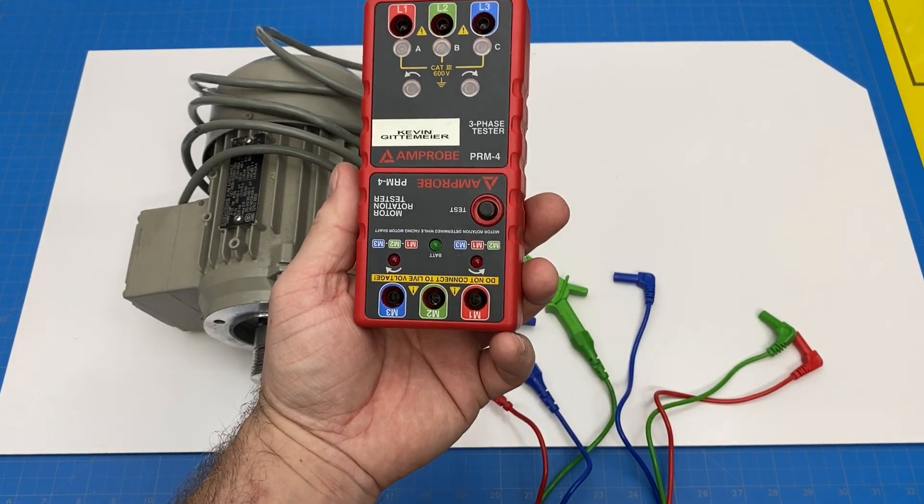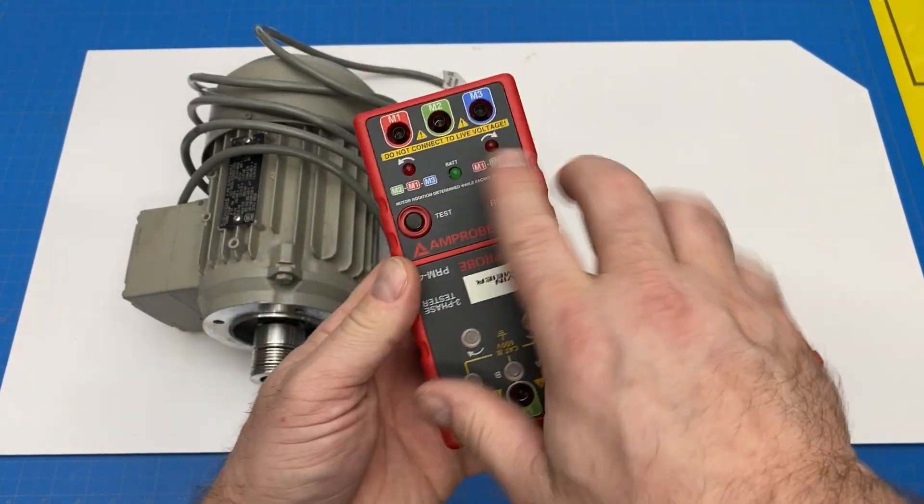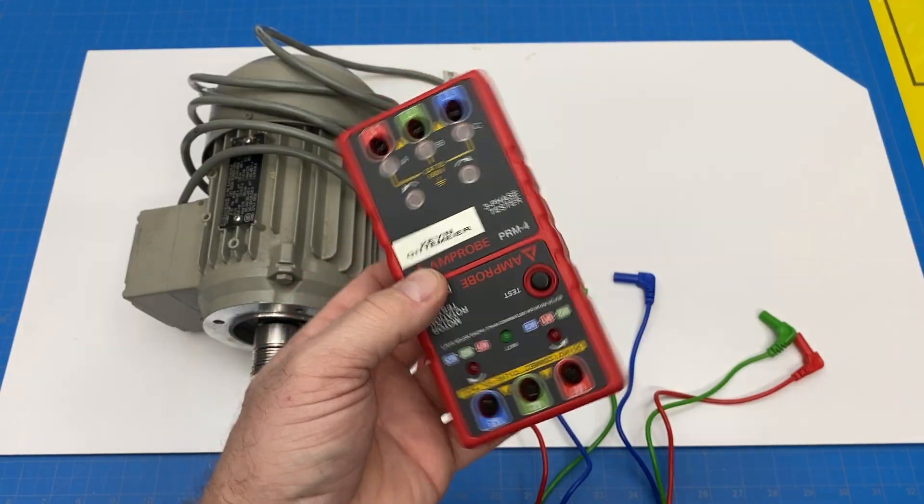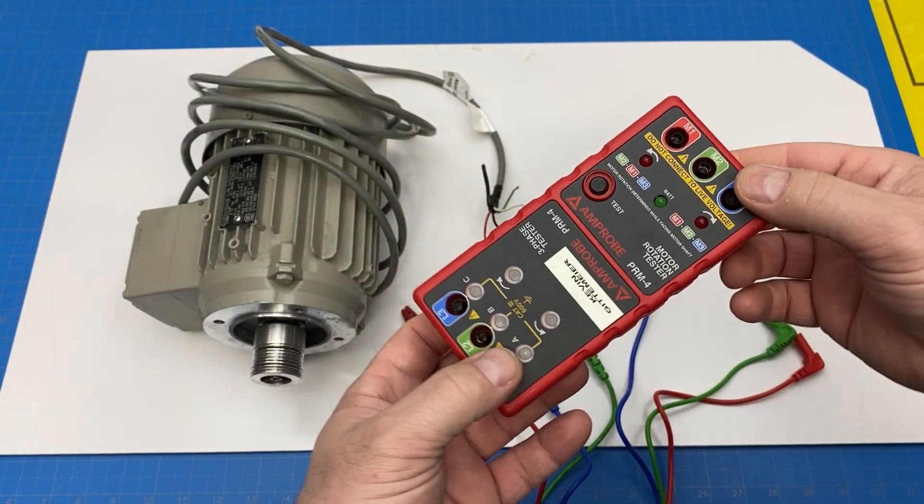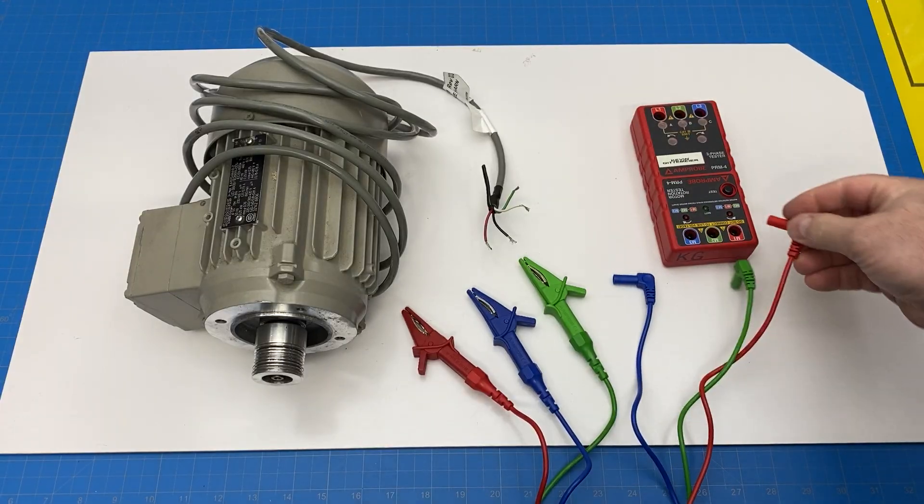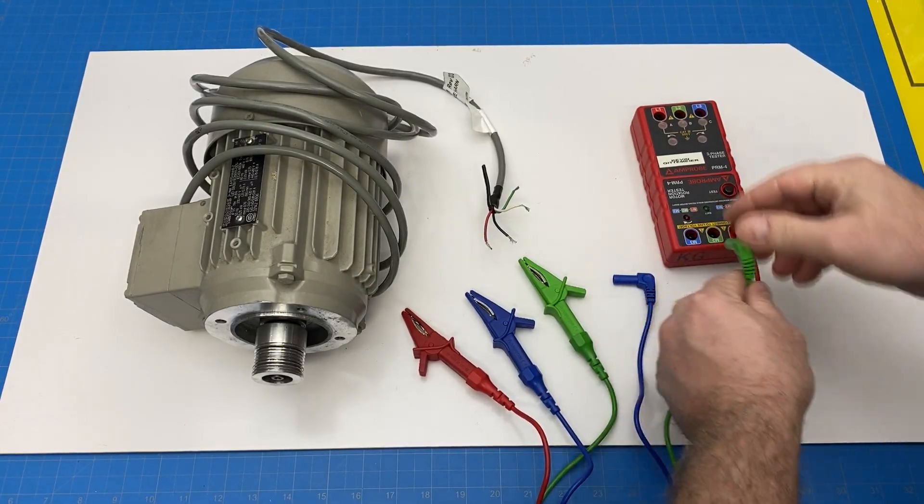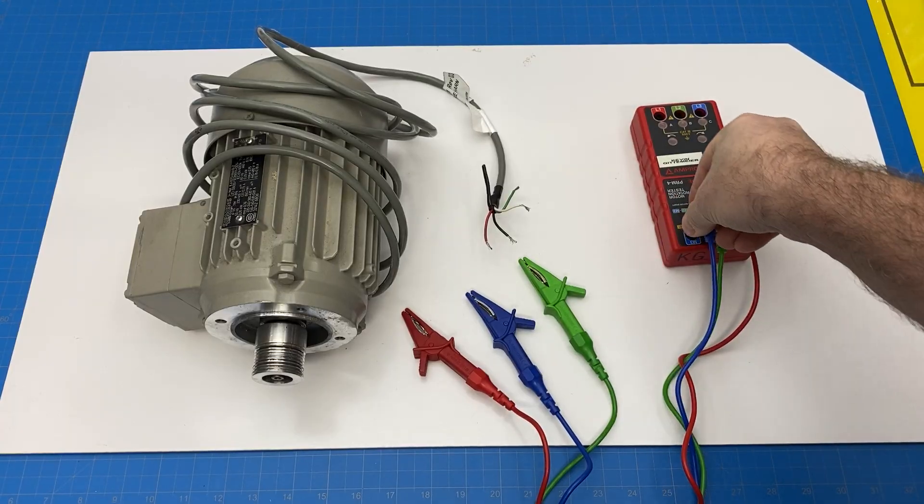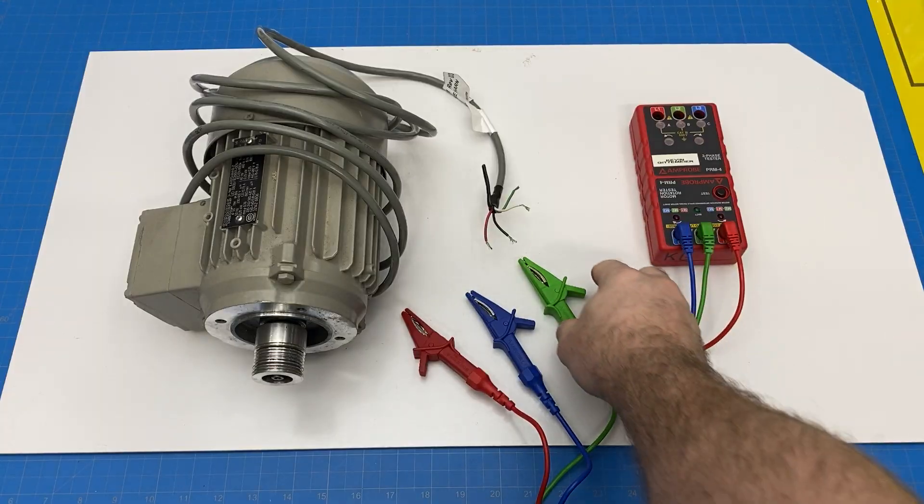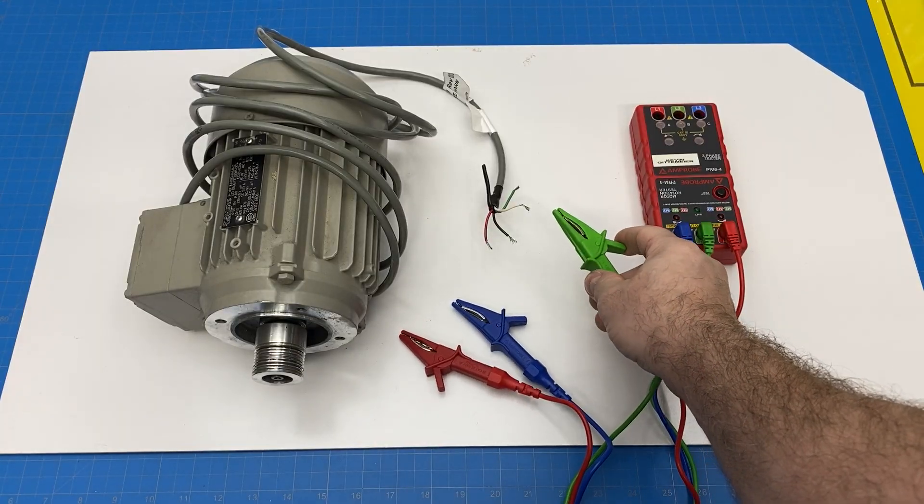All right, we're going to take a look at a phase rotation meter. This works on both motors and also your three-phase. Today we're just going to use it on a motor. So we go to the motor side, plug in our connectors, plug in our leads, and hook them up to the three-phase motor.